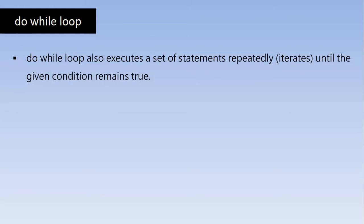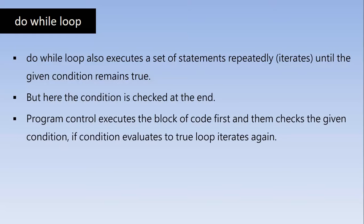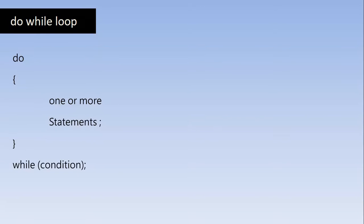Now we'll understand how the do-while loop works. The do-while loop also executes statements repeatedly until the given condition remains true, but here the condition is checked at the end. Program control executes the block of code first and then checks the given condition. If the condition evaluates to true, the loop iterates again. Once the condition fails, the compiler moves on to the next statement.